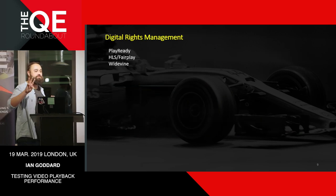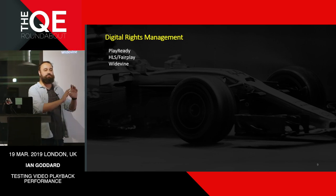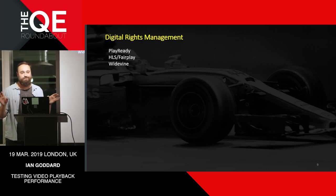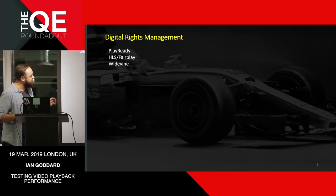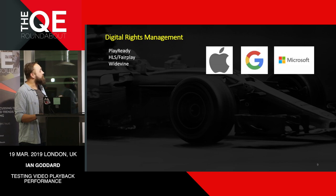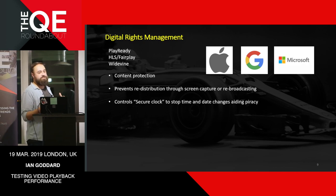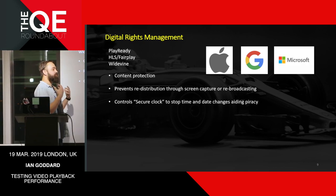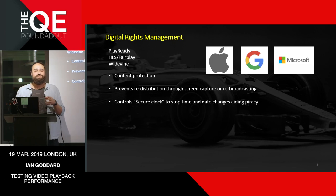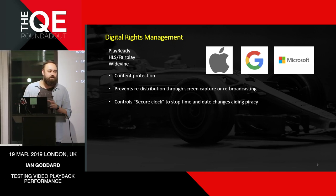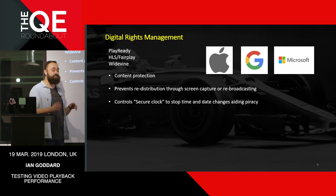DRM comes in three main flavours: PlayReady, FairPlay, and Widevine — made by Microsoft, Apple, and Google respectively. These are the ones you'll find in most internet streaming. They provide content protection, preventing you from redistributing content through screen capture or rebroadcasting. If you've tried to take a screenshot from Safari with video playing, it goes black — that's DRM. It says only this person can see this content.